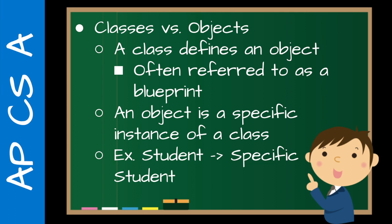Classes versus objects: the canonical analogy is that a class is a blueprint for an object. It defines what the attributes of the object are and what methods it has — what the object can do. An object is a specific instance of a class. The class defines what an object is and then we have specific instances — for example, a student class, and then Alice is a particular student, Becky is another particular student.